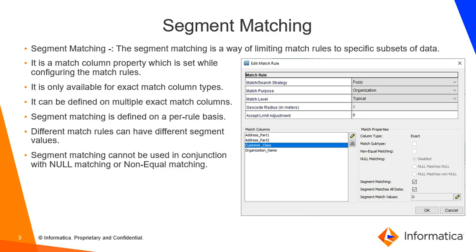Segment Matching is only available for ExactMatchColumn types. It can be defined on multiple ExactMatch columns. It is defined on a per-rule basis, and different match rules can have different Segment values. Segment Matching cannot be used in conjunction with either Null Matching or Non-Equal Matching.